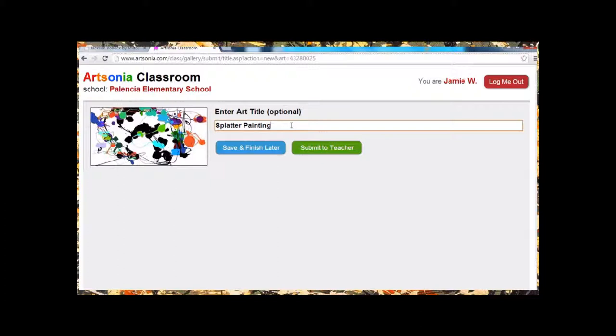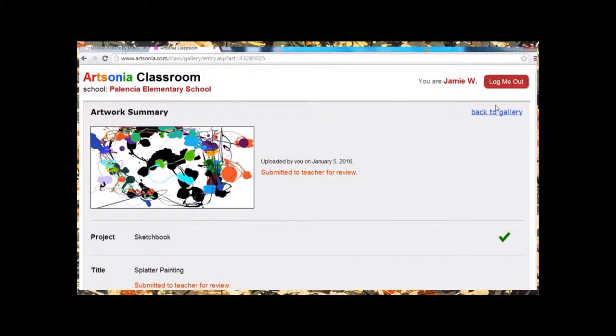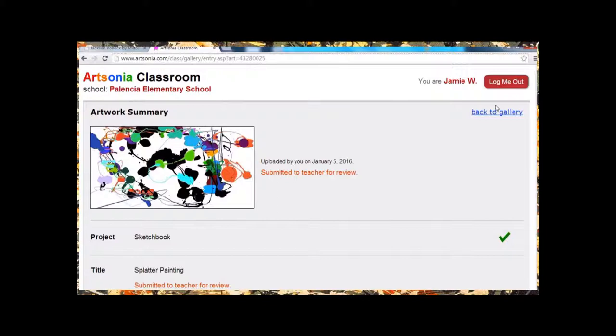And then I can enter in a title. I can click submit to feature. And my statement can be what I learned. I learned about Jackson Pollock. Submit to feature. And then I'm done. Then you can log out and you can play around more or you can save your drawing. So, I hope that helped and I can't wait to see all of your amazing abstract splatter paintings on the computer.